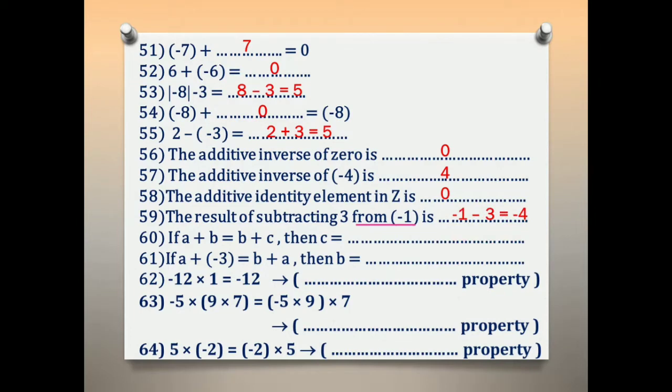Number 60: if A plus B equals B plus C, then C equals what? This is the commutative property. Cancel B with B on both sides. So C equals A.